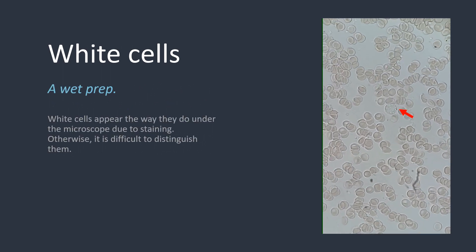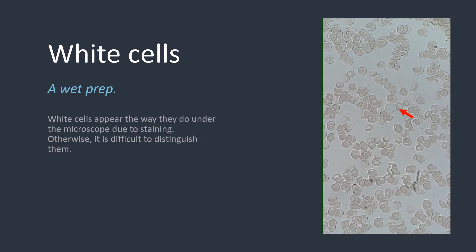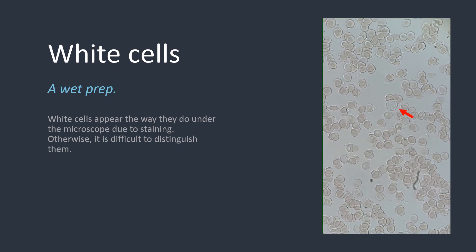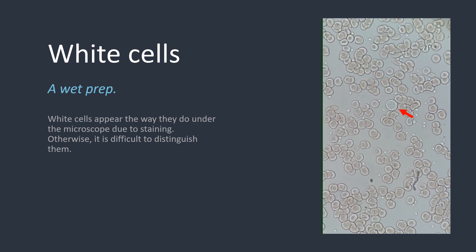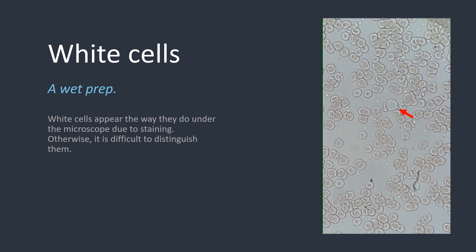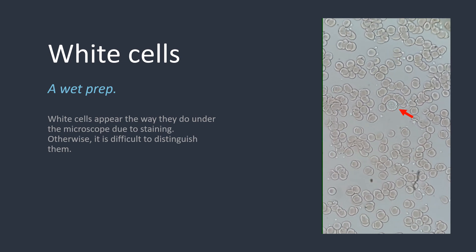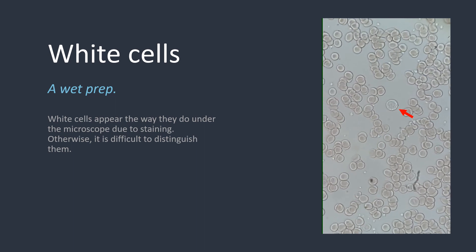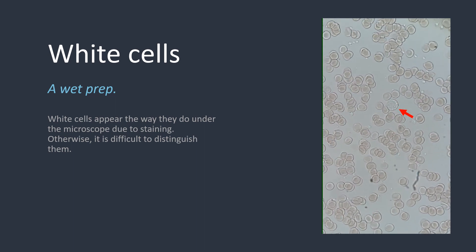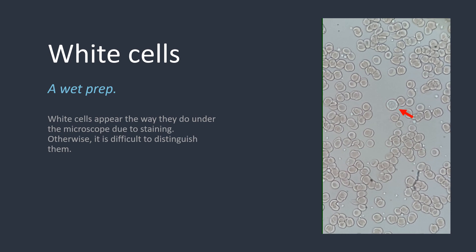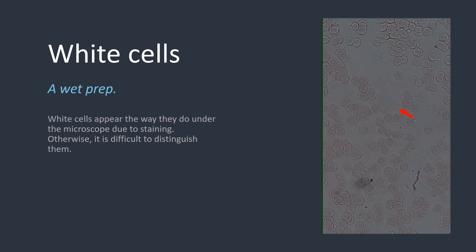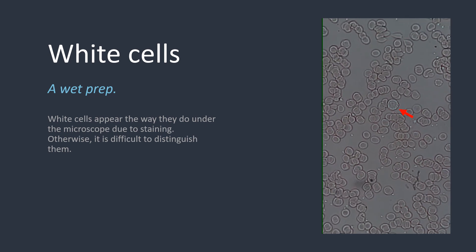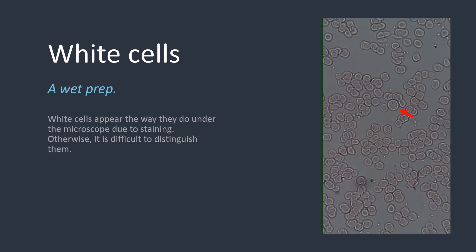If you watched the introduction to red cells video — the link is in the description below if you haven't — you'll have seen this clip of a wet prep before. A drop of blood was placed on a glass slide, a cover slip put on top, and the blood viewed under the microscope. The blood is not stained nor has it been fixed. You can see the red colour of the erythrocytes, or the red cells, due to the haemoglobin. The immobile white cell, marked with the arrow, doesn't really seem to have a colour — we can make out some granulation due to the texture of it, but that's really it.